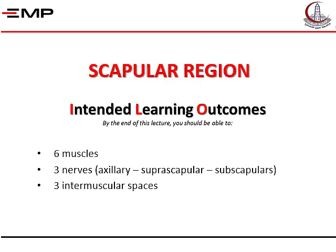The second part is about the scapular region. We will cover six muscles supplied by three nerves — axillary, suprascapular, and subscapular — and we have three intermuscular spaces.